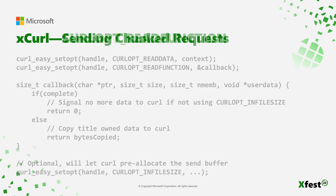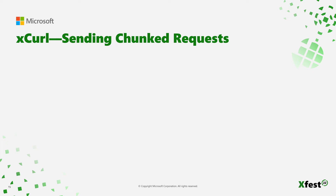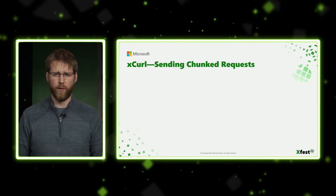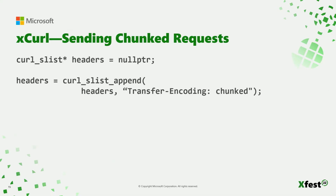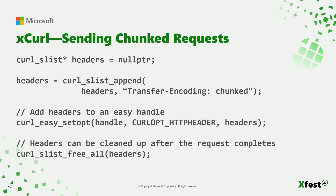If you don't know how much data you're sending, there is a way around this requirement, and that's through chunked requests. Chunked requests work with the read callback to send the data up, but you have to set the Transfer-Encoding: chunked header. This sets the internal state of Xcurl and WinHttp to expect that you don't know how much data you're going to send and be able to send it up in individual chunks. So you just append this header to your list of headers, attach your headers to your request, ensure it lives until your request has been completed, and you can clean it up and recycle it.